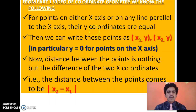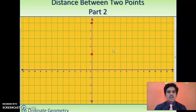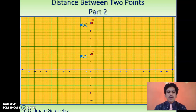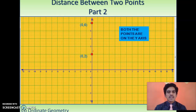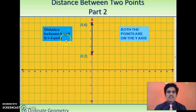If you have followed Part 1 then it is very simple to follow this second one. We have taken two points on the y-axis, namely A and B. Since the points are on the y-axis, their x-coordinates are zero. So the coordinates are A = (0, 2) and B = (0, 6). Now by counting the units from A to B — 1, 2, 3, 4 — the distance between A and B is 4 units.